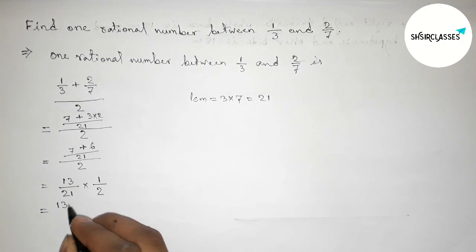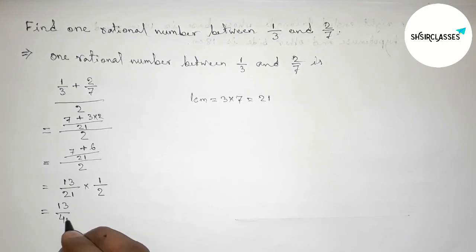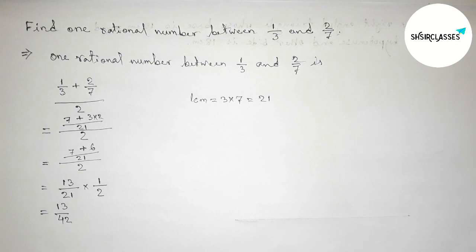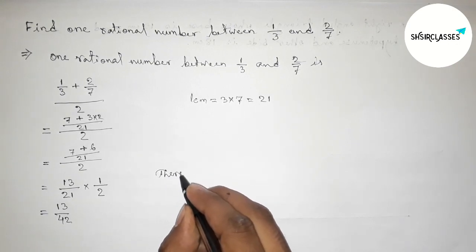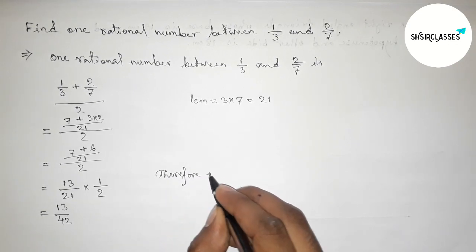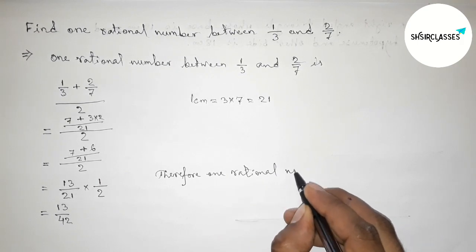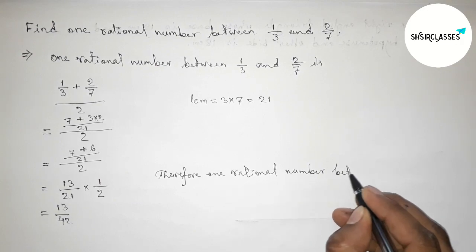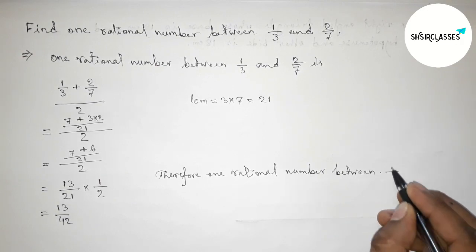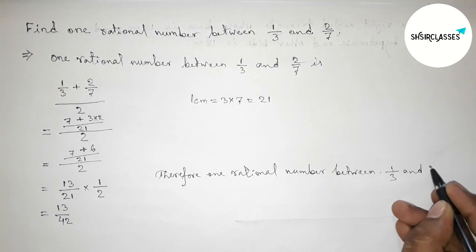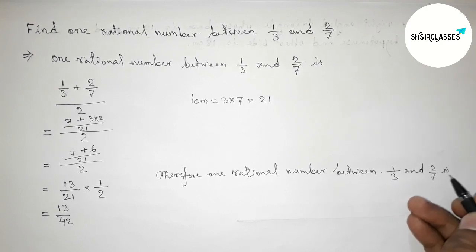So here 13/42. Therefore, one rational number between 1/3 and 2/7 is 13/42. So by this way you can find one rational number between 1/3 and 2/7.